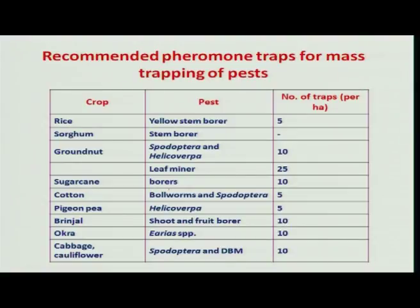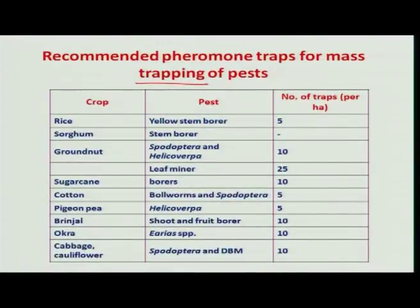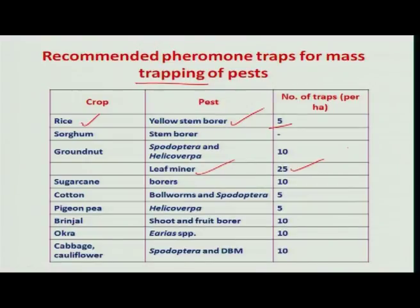By studying the effectiveness of pheromone traps and their utilization in mass trapping, scientists have recommended pheromone traps for use in pest management programs in various crops. In rice, for the management of yellow stem borer, you can use five traps per hectare. In the case of leaf miner in groundnut, you can use 25 traps per hectare, to trap adults and reduce the pest population in a location.